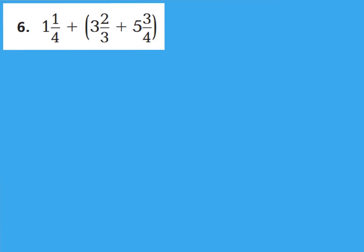Let's look at question number 6: 1 and 1 fourth, 3 and 2 thirds, 5 and 3 fourths. Which two would you group together in parentheses? You would group the ones with the same denominator. So rewrite this as parentheses 1 and 1 fourth plus 5 and 3 fourths, grouped together. That uses the commutative property — switching addends around — and also the associative property, because you're grouping different addends.